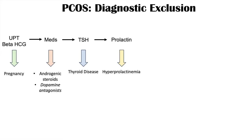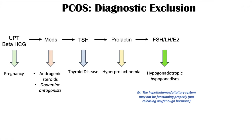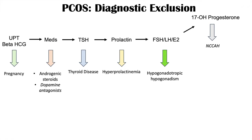You can then look at FSH or follicle stimulating hormone, LH or luteinizing hormone, and estrogen levels to help rule out hypogonadotropic hypogonadism. You can also look at 17-hydroxyprogesterone to see if these patients have non-classical congenital adrenal hyperplasia, or NCCAH, which can actually mimic PCOS quite a bit. You can then look at androgen levels to assess hyperandrogenism — which could be due to PCOS or to an androgen-secreting tumor.